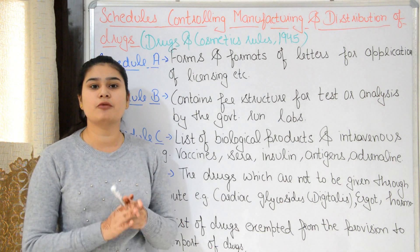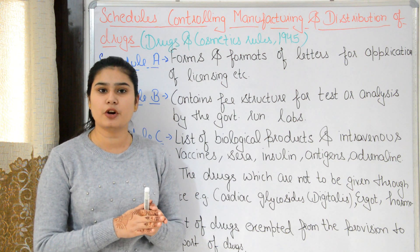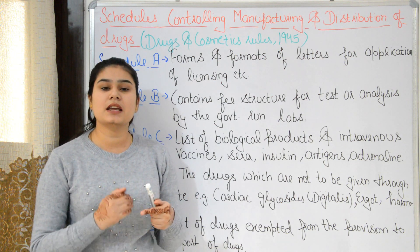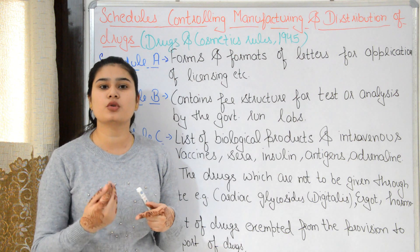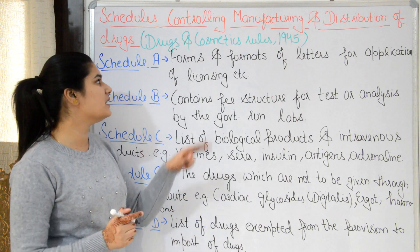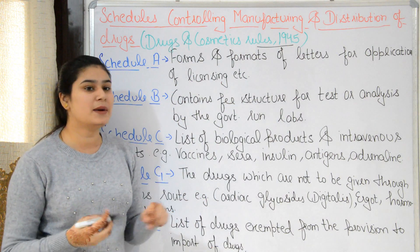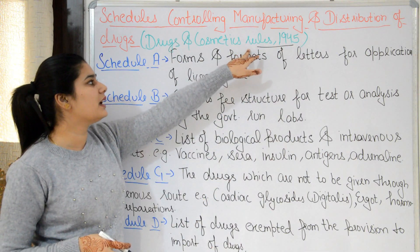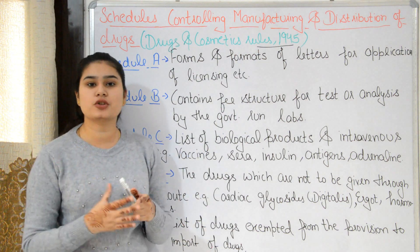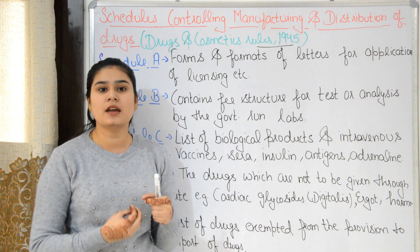Drug and Cosmetic Act was created in 1940 by the Indian Parliament — it is called the DMC Act. Under the DMC Act, we control drug manufacturing, distribution and import. The DMC Act 1940 was followed by Drug and Cosmetic Rules in 1945. There are some schedules under the Drug and Cosmetic Rules 1945, which regulate drugs — storage, distribution, display and prescription.